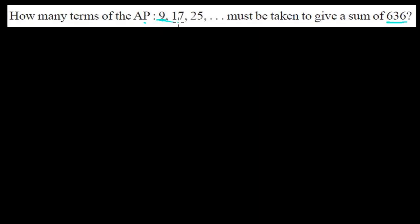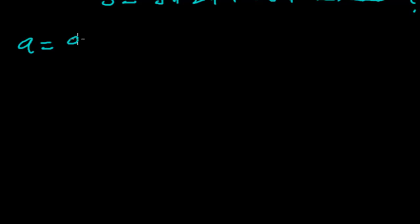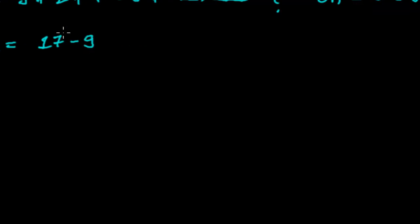The first term is 9, the second term is 17, the third term is 25. So we can easily calculate the common difference. The sum of the whole series is also given. The common difference is 17 minus 9, which equals 8. So we have the first term, common difference d=8, and sum Sn=636.